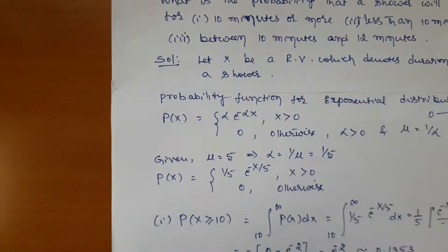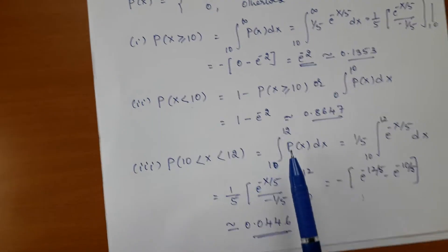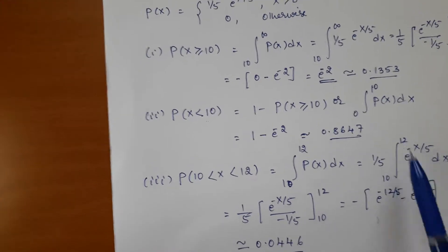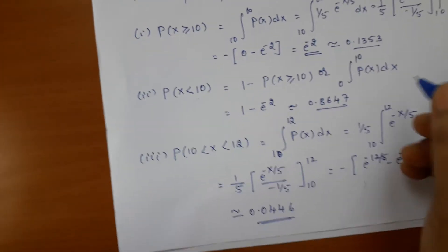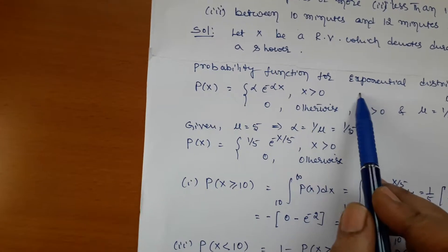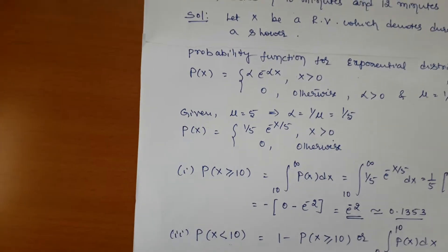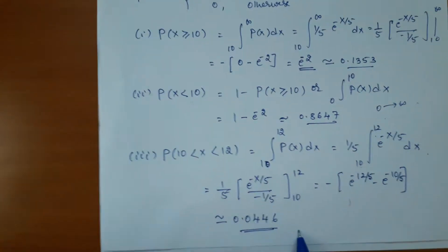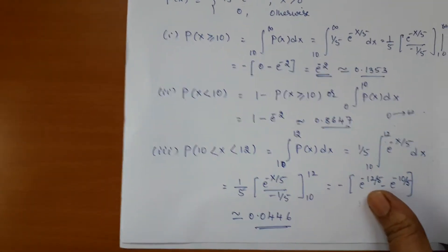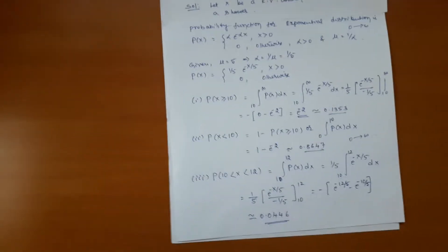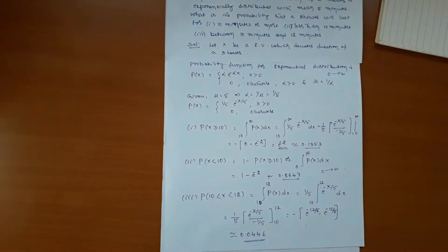Case 3: Find P(10 < X < 12). We integrate f(x) = (1/5)·e^(−x/5) from 10 to 12. Since 10 to 12 is within the range 0 to infinity, the same probability function applies. Integrating and simplifying, we get approximately 0.046. This completes all three cases for the shower duration problem.